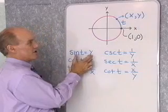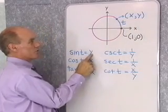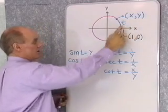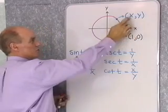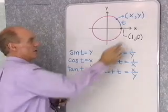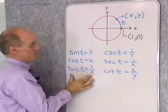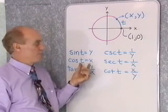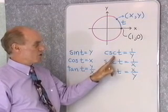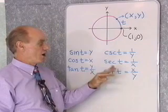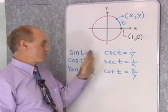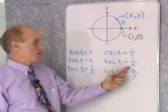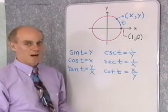The sine of t — that is, the sine of this arc length t — is equal to y. So that y-coordinate is the sine of this arc length t. The cosine of t is equal to x, and the tangent of t is y divided by x. So you can see tangent of t is still sine t over cosine t. The definitions for cosecant, secant, and cotangent give us the reciprocal identities: cosecant is 1 over y, secant is 1 over x, cotangent is x over y.